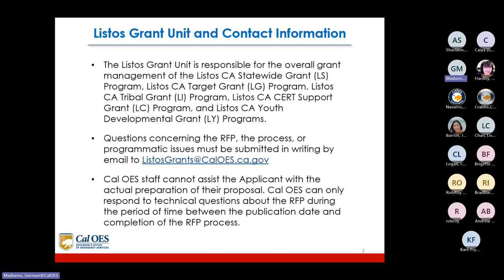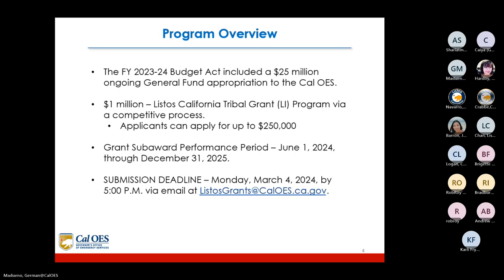The FY 2023–2024 Budget Act included a $25 million ongoing General Fund appropriation to CalOES. One million dollars was given to the Listos California Tribal Grant LI program via competitive process.